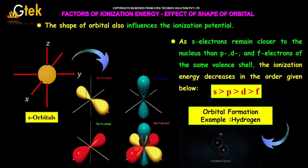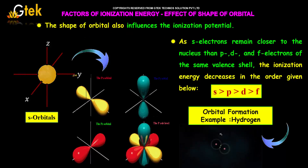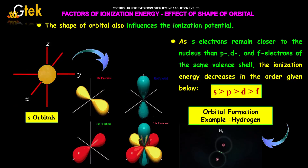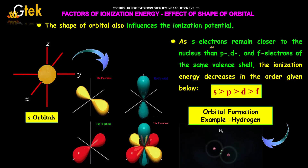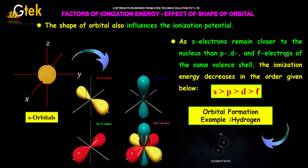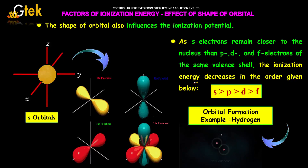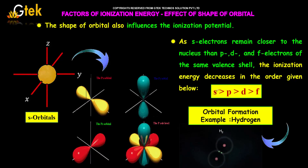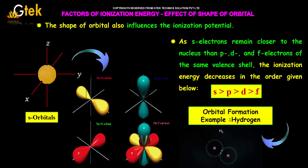The next factor is the effect of the shape of the orbital. The shape of the orbital also influences the ionization potential. As S electrons remain closer to the nucleus than P, D, and F electrons of the same valence shell, the ionization energy decreases in the order: S is greater than P, P is greater than D, D is greater than F.